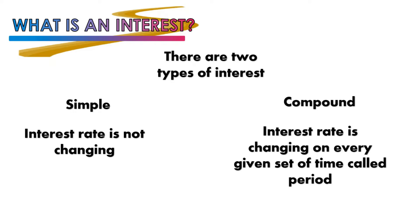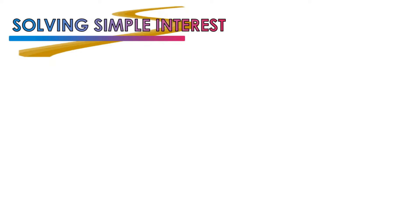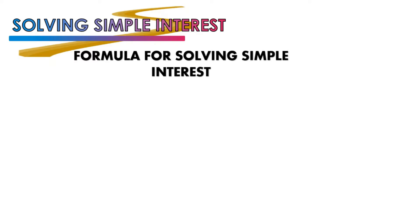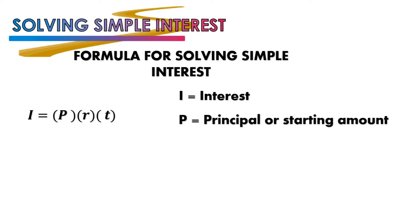Now let's move to solving simple interest. When solving simple interest or any interest problems, you must always understand the formulas first. The first formula is I = PRT. I is the interest — the extra amount added to the borrowed money. P is the principal or starting amount — how much was borrowed. R is the interest rate — the percentage by which the interest grows. And T is the time frame.